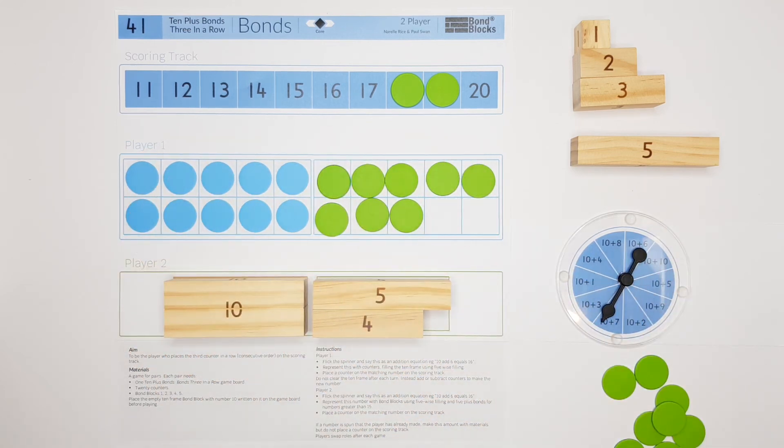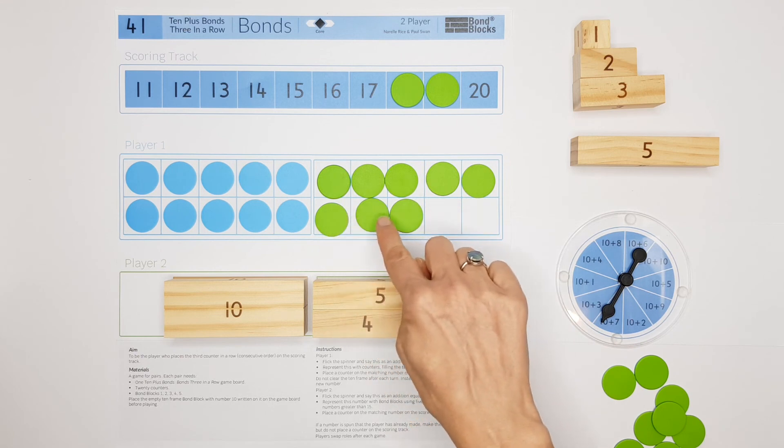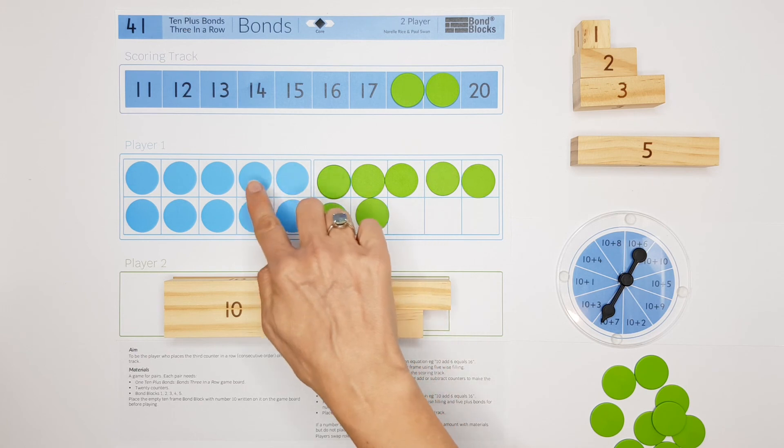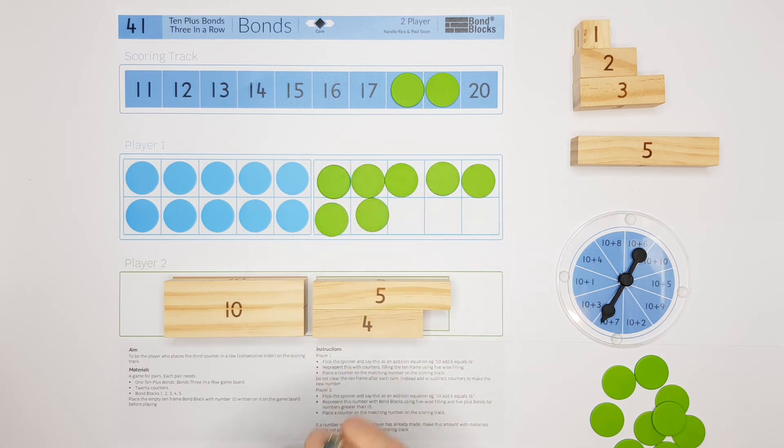Player 1's turn. They leave everything on their board and they spin. Lucky! 17. They adjust their 18 to make the 17. They say 10 add 7 equals 17, and they place the winning counter.